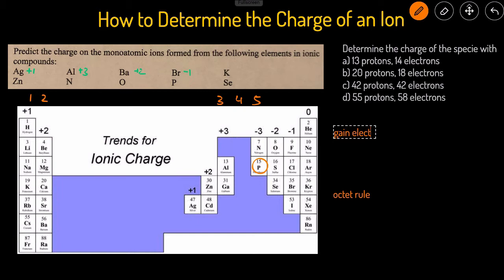Because whenever you gain electrons, that's going to form something that's negatively charged. And when you lose electrons, that's going to form something that's positively charged.